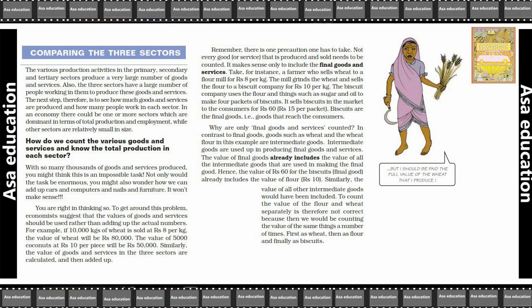Remember, there is one precaution one has to take. Not every good or service that is produced and sold needs to be counted. It makes sense only to include the final goods and services — yani finished products — unko hi include karein.